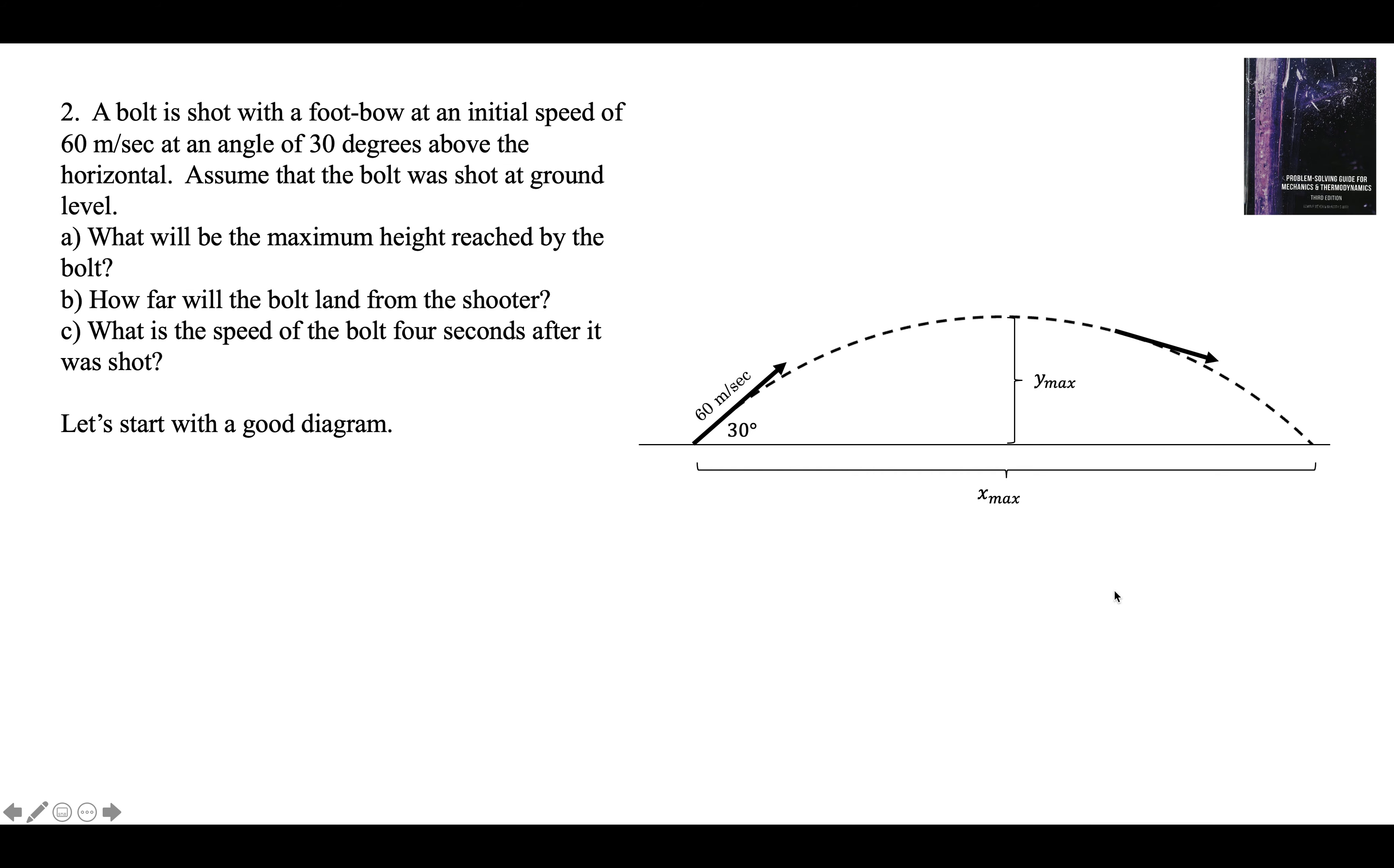So let's just put a vector in over here four seconds later. Now we've got to think this 60 meters per second is neither in the x or y direction. It doesn't belong in any equation. We have to take that 60 and divide it, get the components, get the x component and get the y component.